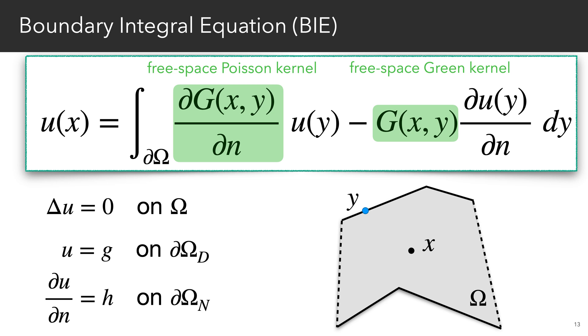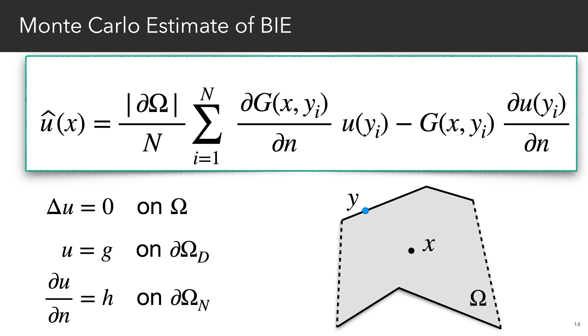Of course, even if we know the boundary values, we need to evaluate this integral to determine the solution at any point, and we can do so by constructing a Monte Carlo estimator. We obviously don't know both types of boundary data, so we have to estimate them.